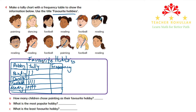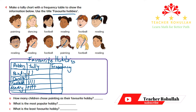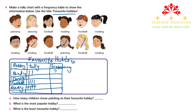Now we fill in the frequency column. How many times is painting repeated? It appears two times, so the frequency is 2. Dancing appears only once — frequency is 1. Football appears four times — frequency is 4. And reading appears five times — frequency is 5.